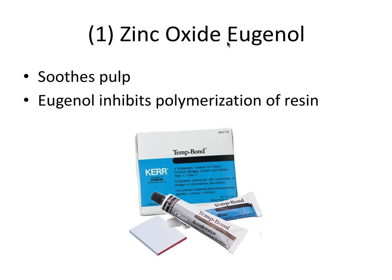The first one is zinc oxide eugenol, and it's actually the third time we've seen this material come up. The first time was as a primary ingredient in gutta percha and root canal filler. The second time was in the periodontal pack used after periodontal surgery. And now we're seeing it a third time being used as a temporary cement. In all of these applications, we're seeing its ability to soothe—in this case, to soothe the pulp.